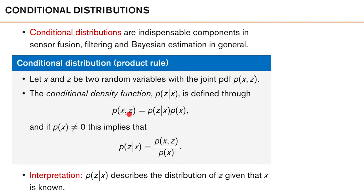So the conditional density of z given x times the marginal distribution of x. This implies that for possible values of x — that is, values of x which have non-zero probability density — we can write the conditional density of z given x as the ratio between the joint probability of x and z divided by the marginal of x. So we normalize the joint distribution of x and z with the probability of x to get the conditional density of z given x.